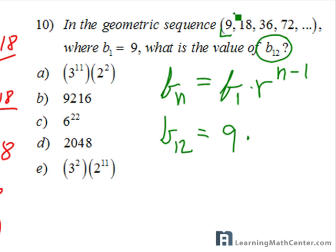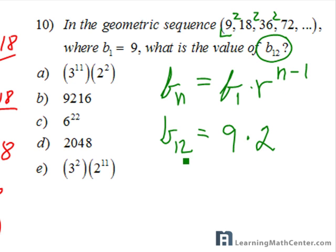From 9 to 18, I know I have to multiply by 2. And as you can see, 18 times 2 is 36, and 36 times 2 is 72, and so on. So the common ratio is 2. We're looking for the twelfth term, so it's 12 minus 1, which gives you 11. That's how we find the twelfth term.